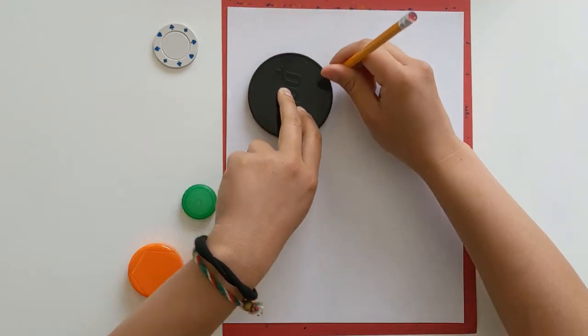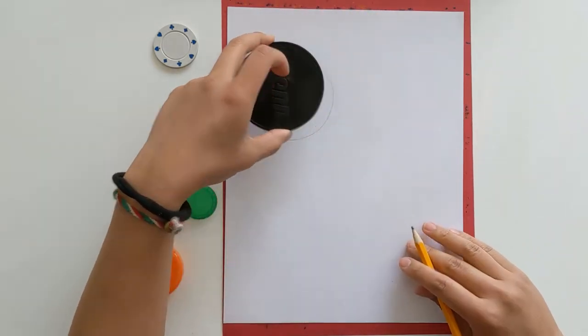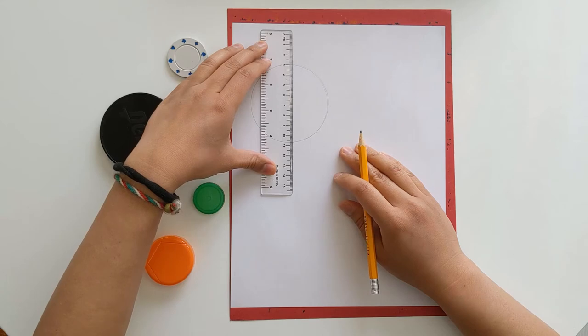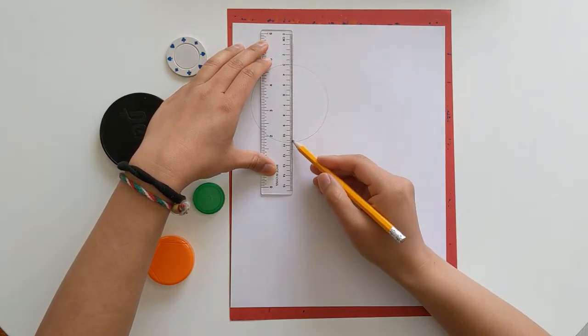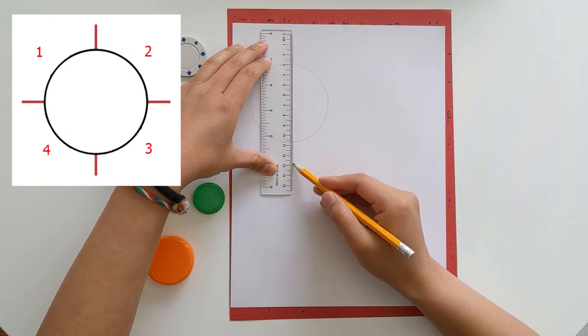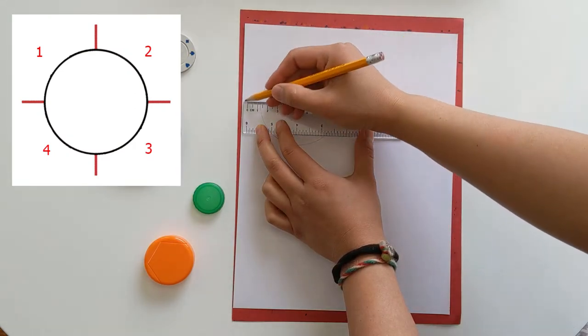To make the petals, we need to divide the circumference, the distance around the circle, into 12 parts since there are 12 petals. Taking a ruler, I mark the lines that divide the circle into fourths. I'm just eyeballing it and trying to divide it as evenly as I can. It doesn't have to be exact.